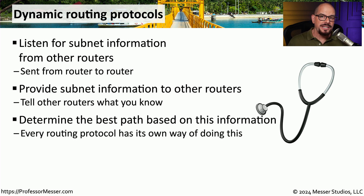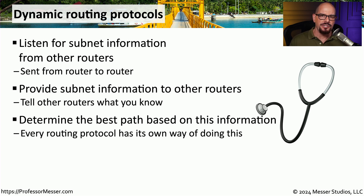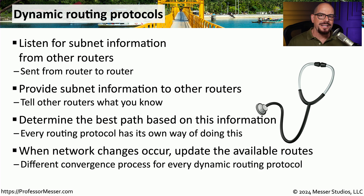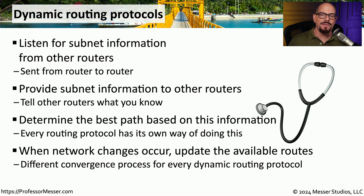Once the other routers receive this update, they need to interpret this information and determine if that's a better route than what they already have, or if they should use it as a secondary route. Different routing protocols use different methods to make these decisions and will update their routing tables differently depending on the protocol you're using. And of course, if there is any change to the network infrastructure, these routers need to inform all the other routers that the change has occurred — whether we add a new link, remove a router, or add a router — so that all routing tables are updated across the entire network.